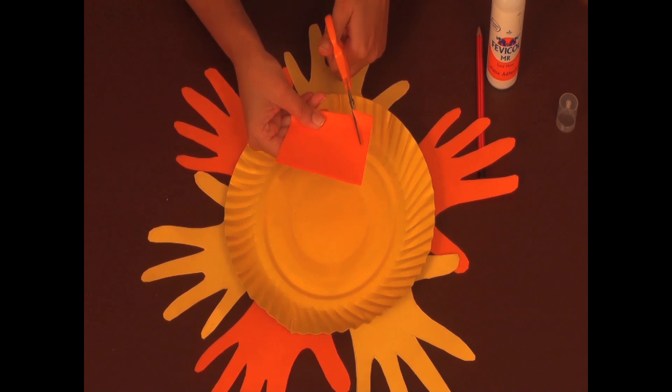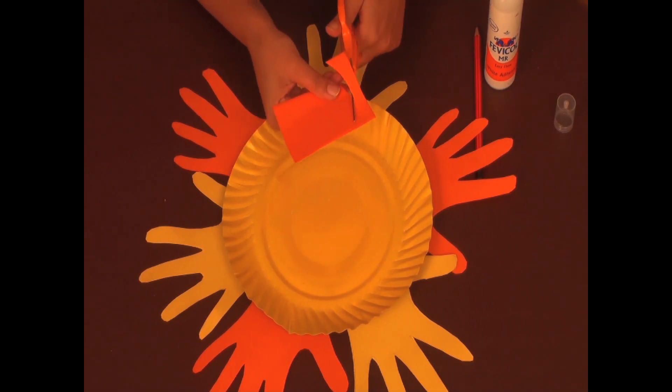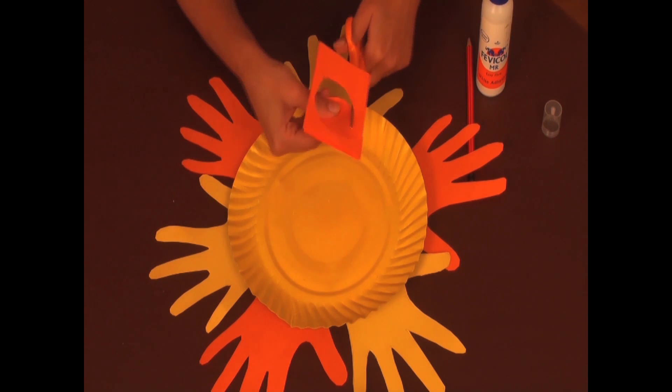Now it's time to give the sun a hot and fiery center. Take a circle of orange paper and glue it right in the middle.